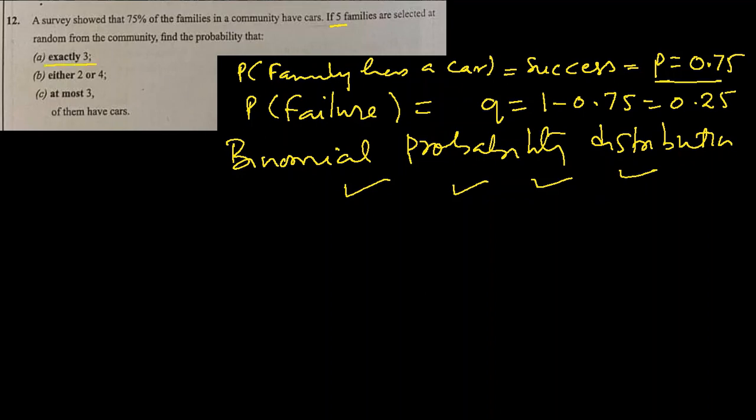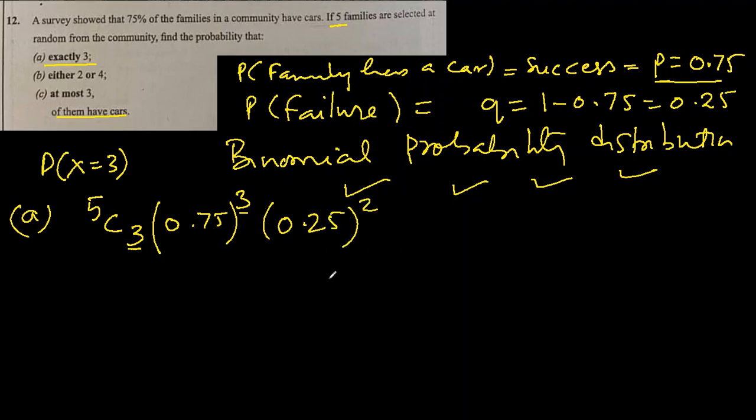They want exactly three families with cars. If five families are selected at random from the community, find the probability that exactly three of them have cars. That means we have three successes. So the probability will be found like this. There are total five selections. We want exactly three. So basically probability that success X is equal to 3. And the success probability is 0.75, which will get the same exponent as this number. And failure will get the remaining two. I will put this in my calculator and get my answer.